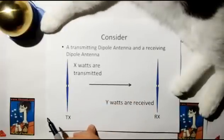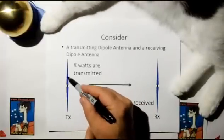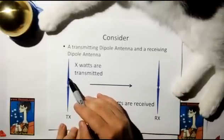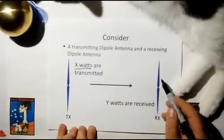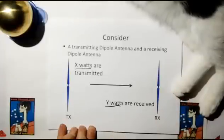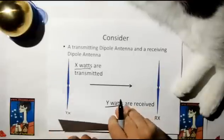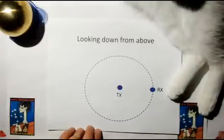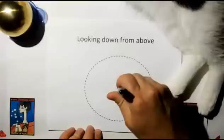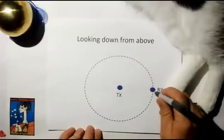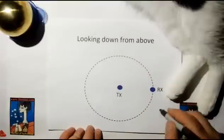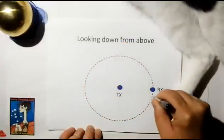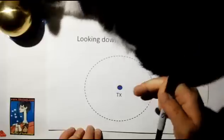Consider that we have a transmitting dipole antenna and a receiving dipole antenna. The transmitter transmits X watts of energy at the receiver, and receiver receives Y watts of power. If we look down from the top and look at the transmitting antenna, there's a certain range that the receiving antenna is at. It doesn't matter where we move around as long as we stay the same distance from the dipole transmitting antenna, the receiver will always receive the same power.